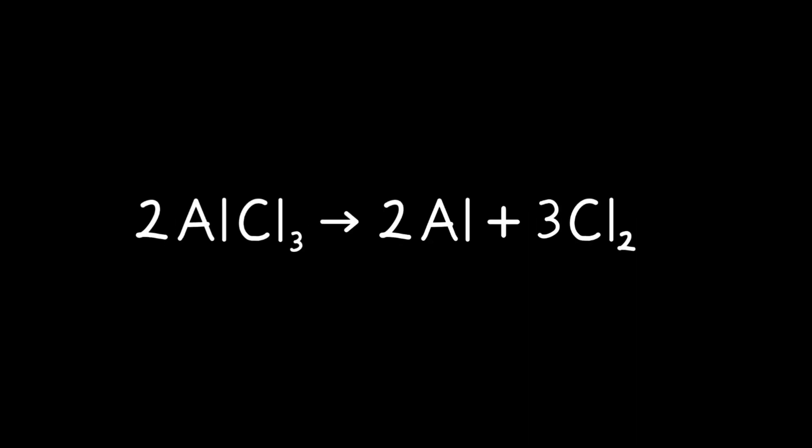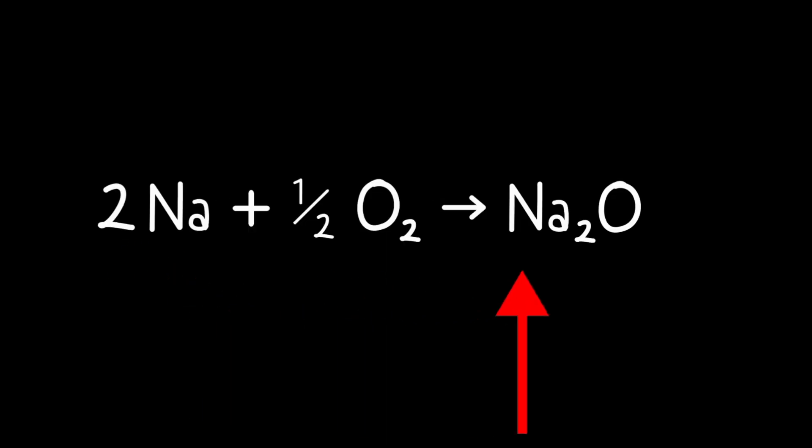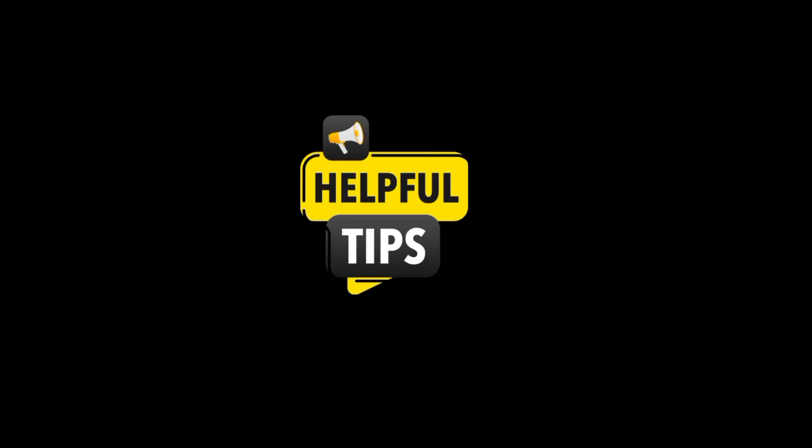One of the most frequent errors students make is forgetting to balance the chemical equation before starting any calculations. If the equation is not balanced, all the stoichiometric calculations will be wrong. Always make sure the number of atoms for each element is the same on both sides of the equation before doing any conversions. Another common mistake is mixing up the mole ratios — it's easy to misread the coefficients from the balanced equation or use the wrong ratio. Write out the mole ratio as a clear fraction and label each part. For example, if the balanced equation shows a 2 to 1 ratio between hydrogen and oxygen, make sure you're consistently using 2 moles of hydrogen for every 1 mole of oxygen.